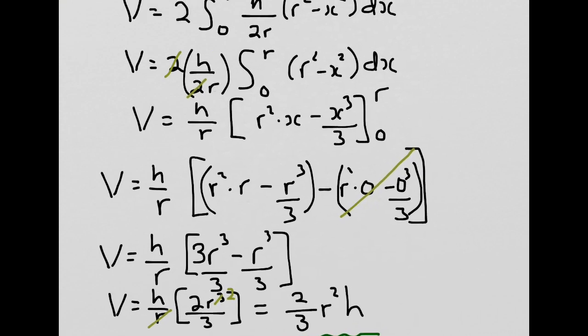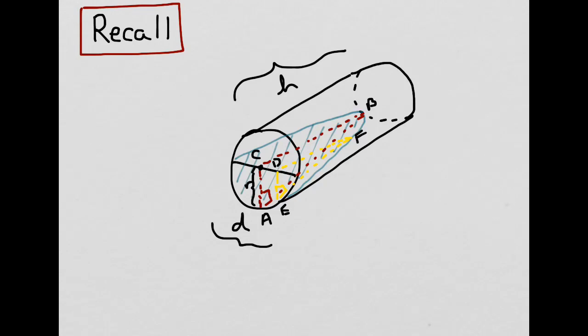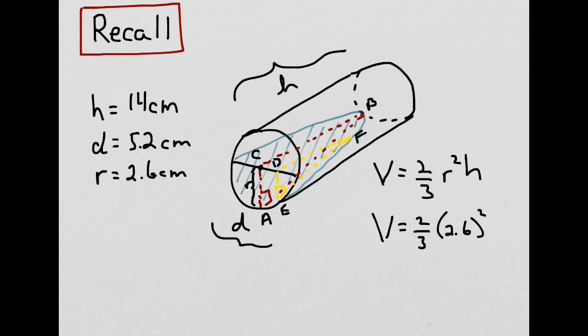What would the volume of water be in the tilted glass cylinder if h equals 14 centimeters and the diameter equals 5.2 centimeters? We know the volume is 2/3 r²h. If the diameter is 5.2, the radius is half that, or 2.6 centimeters. Substituting our values, the volume would be 2/3 times 2.6² times 14. When we work that out, our volume is 63.1 centimeters cubed.